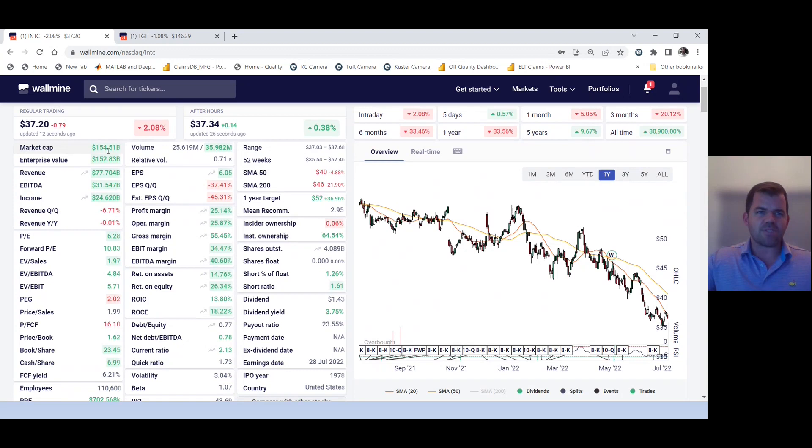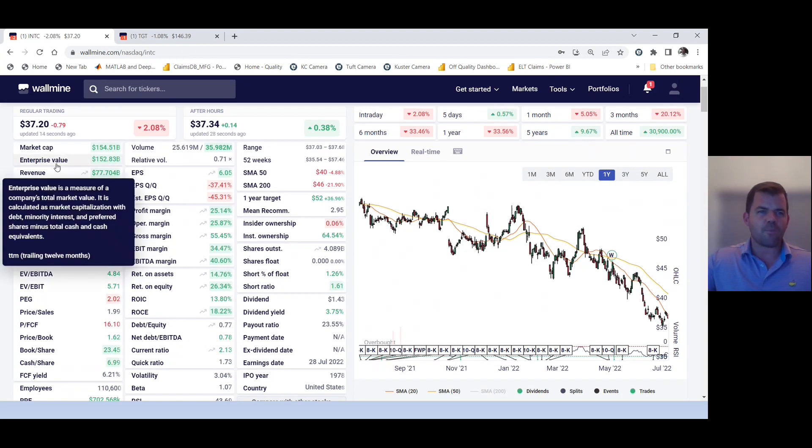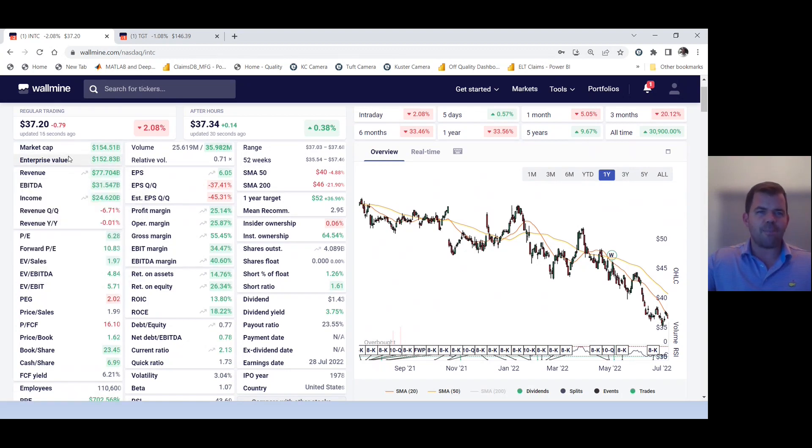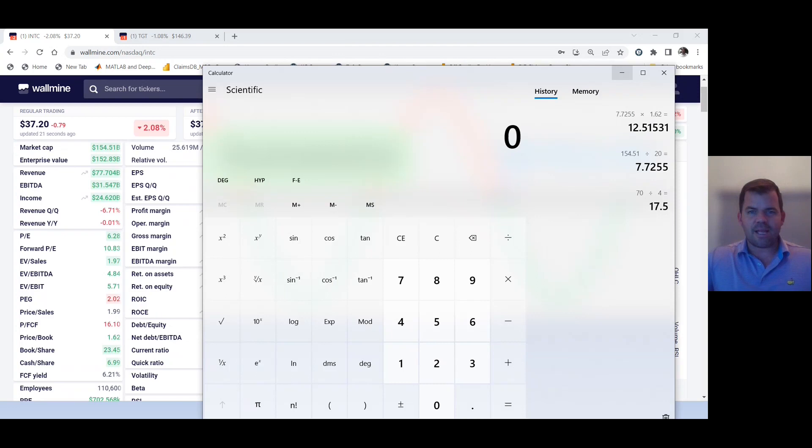I see their market cap is $154 billion. Enterprise, $152 billion. It's not a big gap there. We'll use market cap. So what we're going to do is pull out a calculator. Anybody can do this. We're going to say $154.51 billion divided by $20 billion. That comes out to $7.73.